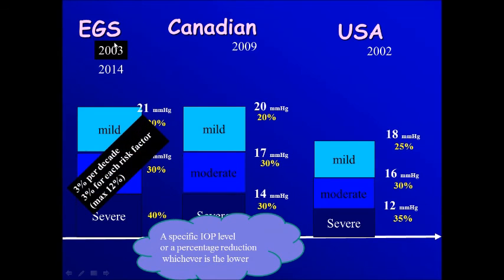Then the European Glaucoma Society in the edition of 2003, they added this factor that 3 percent more reduction per decade and 3 percent for each risk factor with a maximum 12. But this is not included in the last edition of the guidelines.